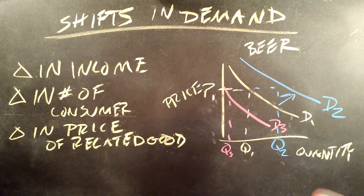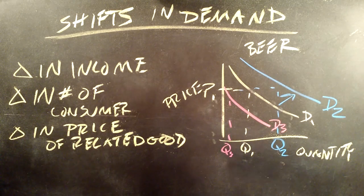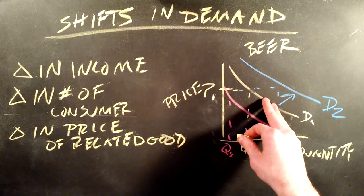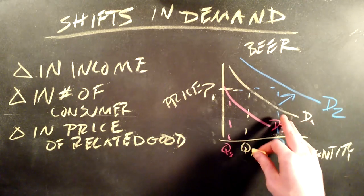So if we saw the price of wine increase, people might start drinking more beer. More precisely, their demand for beer would increase. We'd go from D1 to D2.